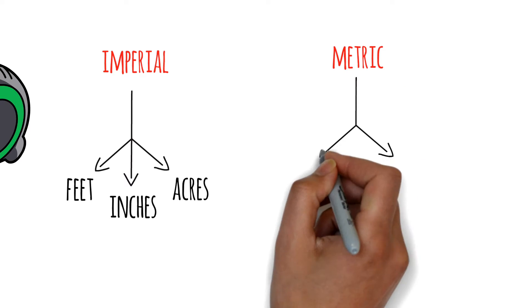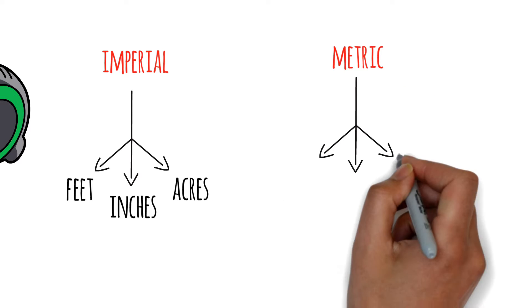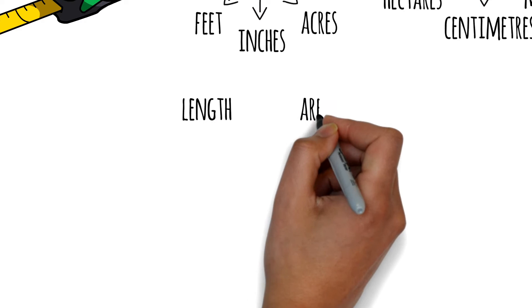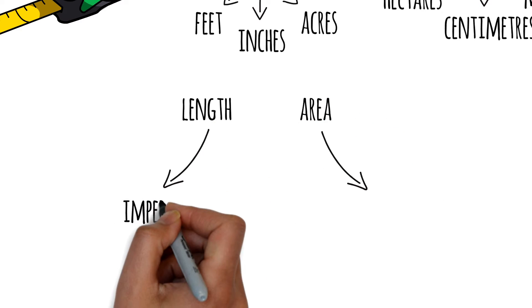For the metric system, some relevant examples include meters, centimeters, and hectares. To make it clearer, let's look at plots in terms of length and area, both in the imperial and metric system of measurement.